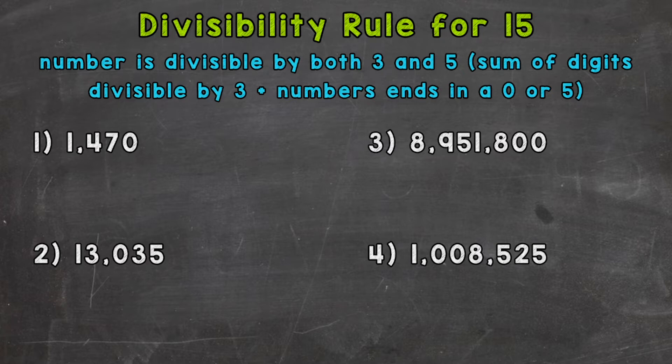Now remember, when we're checking for divisibility, we're checking to see if we can divide without getting a remainder, so the given numbers work out exactly. In this video, we're going to go through four examples and see if those numbers are divisible by 15 based on the rule at the top of the screen.